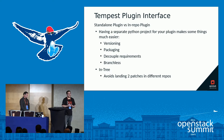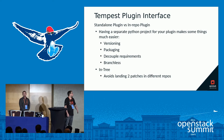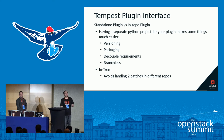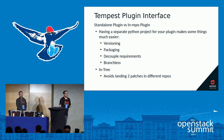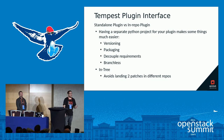Having a dedicated repo allows you to decouple the requirements of the project from the test project. Otherwise, if you're a packager installing Neutron or any project, you'd need to install a ton of extra dependencies. It also allows you to decouple versioning — Tempest is branchless and so are the tests, but projects usually aren't. The only drawback is that out-of-tree requires landing two patches: one to the main project and one to the separate test project.